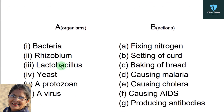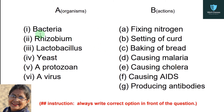Now question number 3: match the organisms in Column A with their action in Column B. Column A organisms: bacteria, Rhizobium, Lactobacillus, yeast, a protozoan, a virus. Column B actions: fixing nitrogen, setting of curd, baking of bread, causing malaria, causing cholera, causing AIDS, producing antibodies.